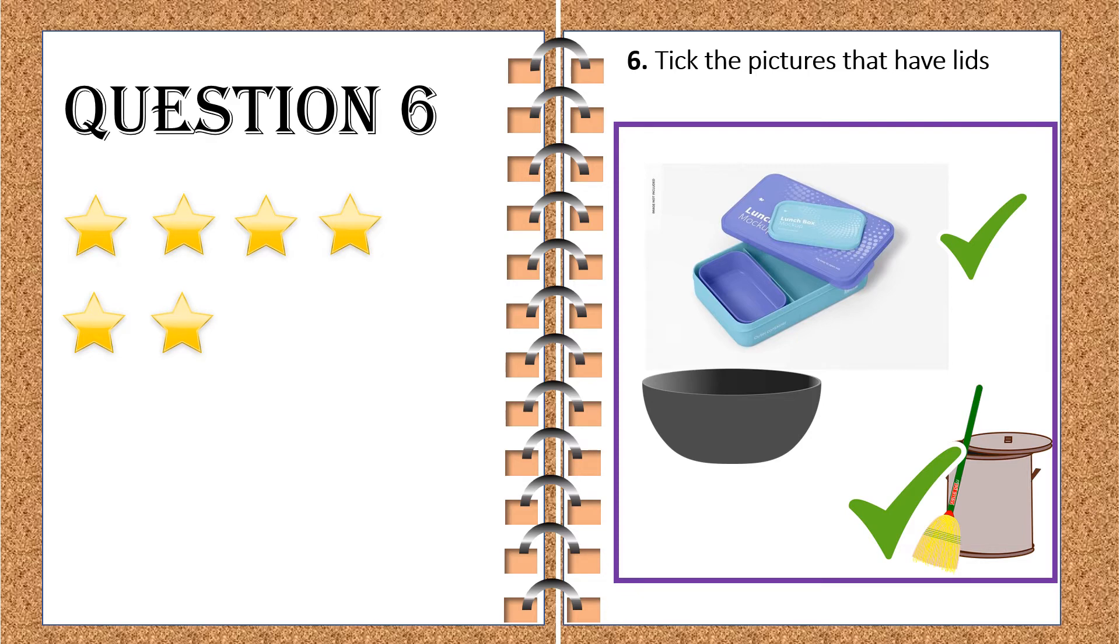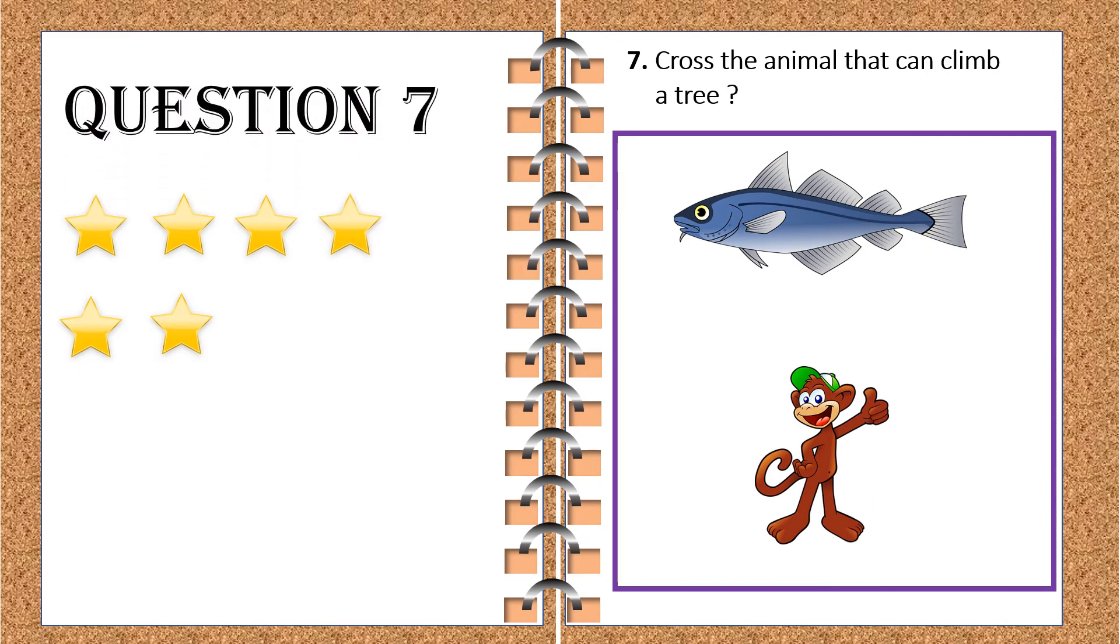Let's turn the next page to see the question number seven. This is our next question number seven. Cross the animal that can climb a tree. Oh! I can see two pictures, a fish and a monkey. Yes. You must have already crossed the correct answer. Let's check the answer. Yes. Monkey climbs up the tree. And fish? No, fish lives in water. That's right. We get total seven stars. Let's turn the page once again.